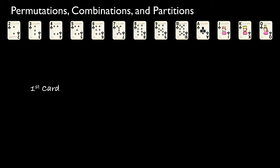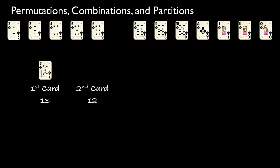The first card we select could be any of the 13 original cards, therefore we have 13 ways in which we can select this card. We might, for instance, select the 7 of clubs as our first card. Regardless of which card we select first, we'll now be choosing our second card from the remaining 12 cards. We might, for instance, select the 3 of clubs as our second card. Because we had 13 ways to select our first card and 12 ways to select our second, the number of ways in which we could select the first two cards is 13 times 12, or 156.